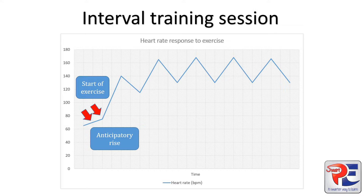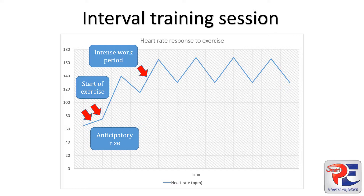A HIIT session involves a period of high intense work followed by a period of less intense recovery, and this graph is characteristic of what we would expect to see. Here we have a period of intense work where the heart rate rises quite rapidly, just like it did at the start of exercise. The heart is having to increase how many beats per minute in order to supply muscles with the oxygen they need for energy.